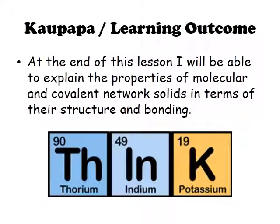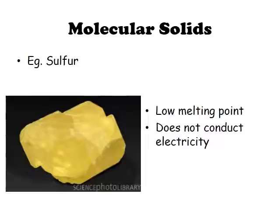This video is going to be on covalent solids, both network and molecular. By the end of the lesson, you'll be able to explain the properties of both molecular and covalent network solids in terms of their structure and their bonding. The first type is molecular solids — here's an example called sulfur, which is an element.